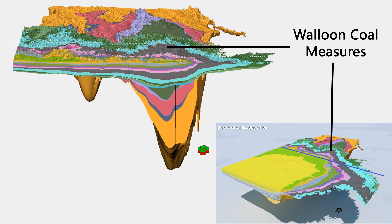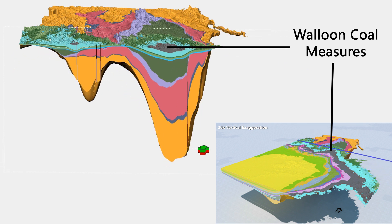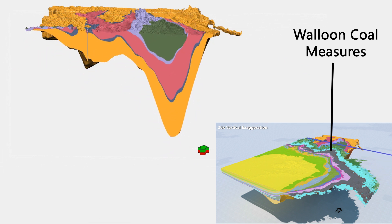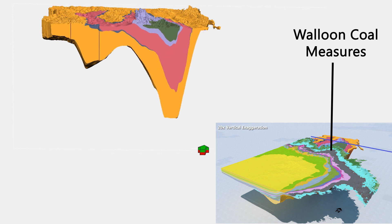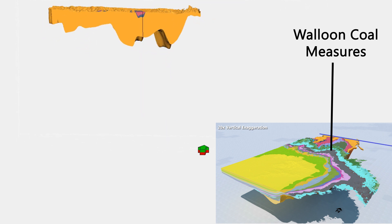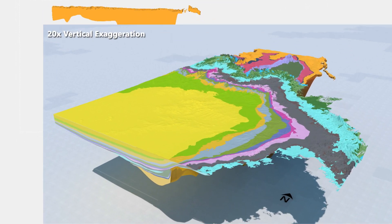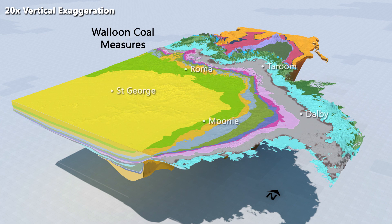As we move south to north, the formations vary in depth and thickness. One of those formations, the Walloon Coal Measures, is the target formation for coal seam gas production in the Surratt Basin.